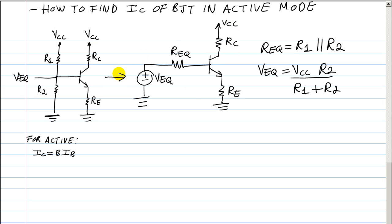Once you have those values, the next step is to label the voltage from the base to the emitter. We have a loop so we do KVL. VEQ is equal to the voltage at resistor REQ.